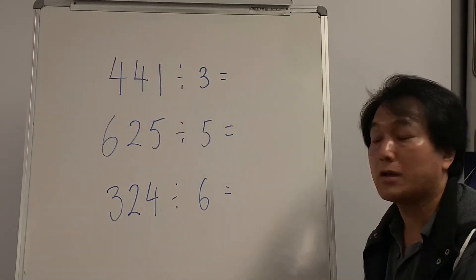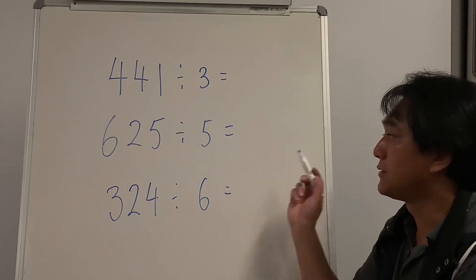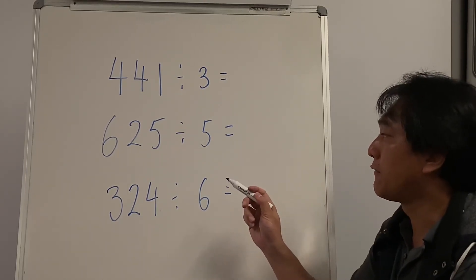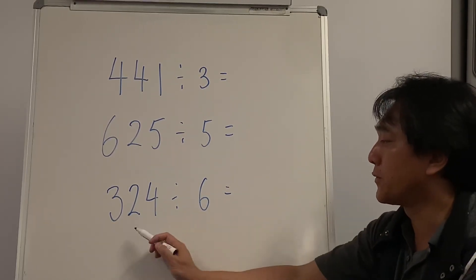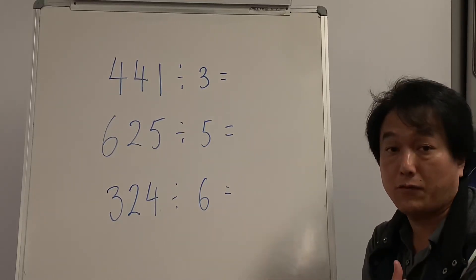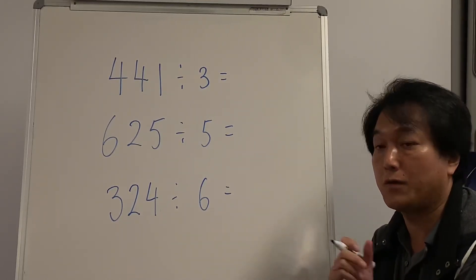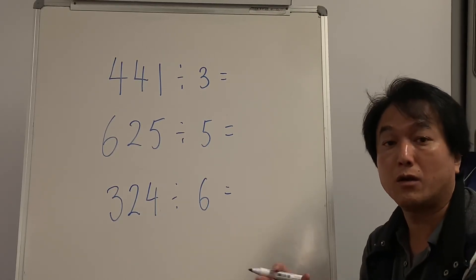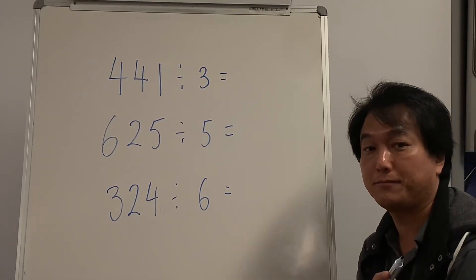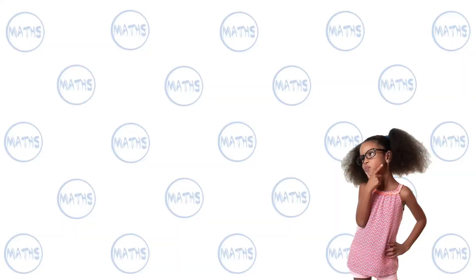I'm going to give you three questions to try at the end: 441 divided by 3, 625 divided by 5, and 324 divided by... see if you can do it by yourself. If you have difficulties, you can rewind the video and learn it again. Good luck!